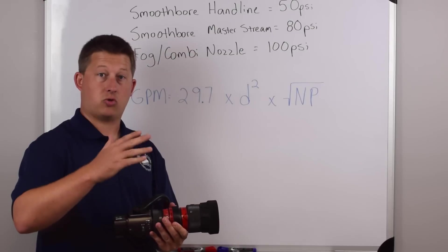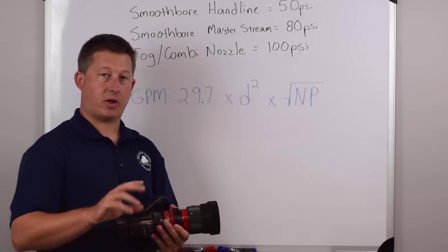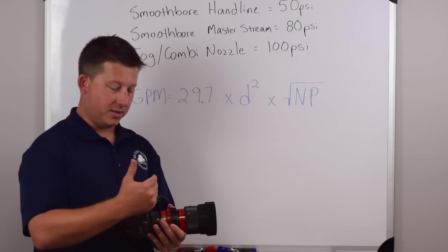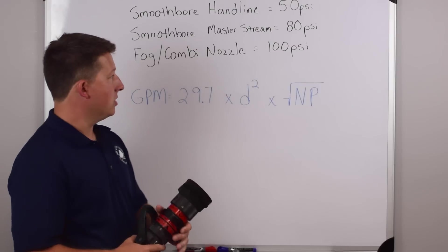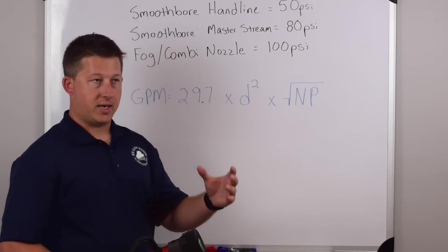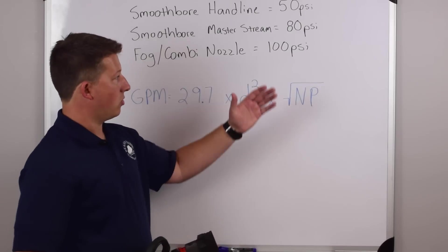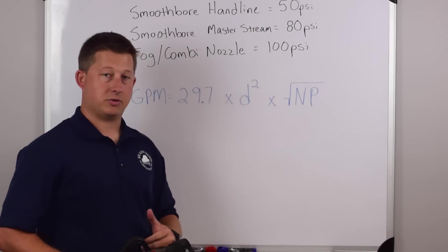So we're going to have to compensate by throttling up a little bit on the pump panel to make sure that we keep 75 PSI nozzle at the nozzle pressure. So for the rest of our test and what we're going to be talking about, we're going to be using 100 PSI fog nozzles from here on.